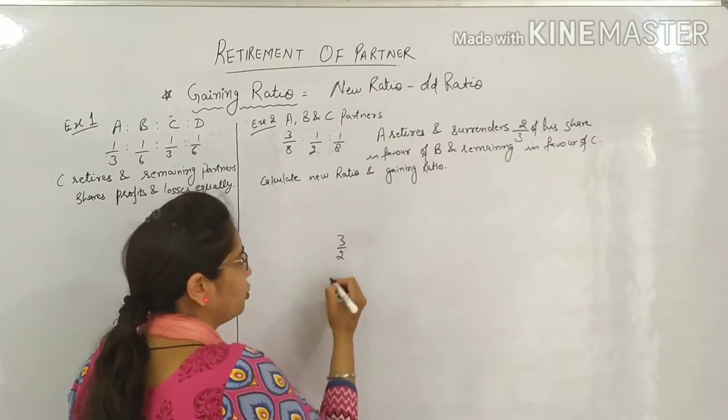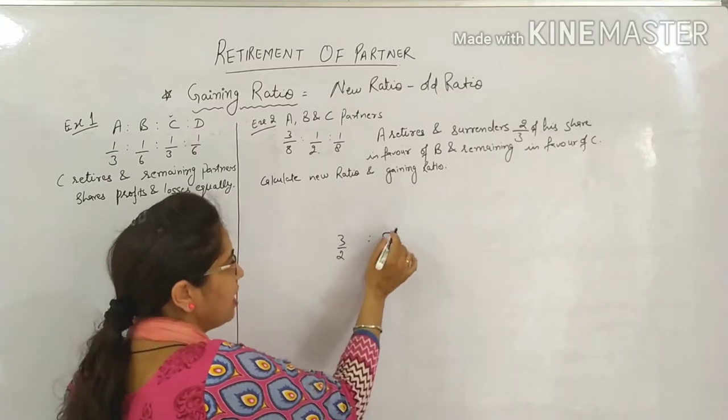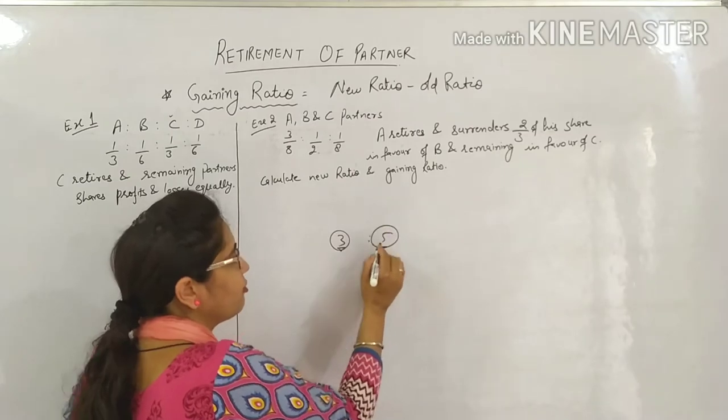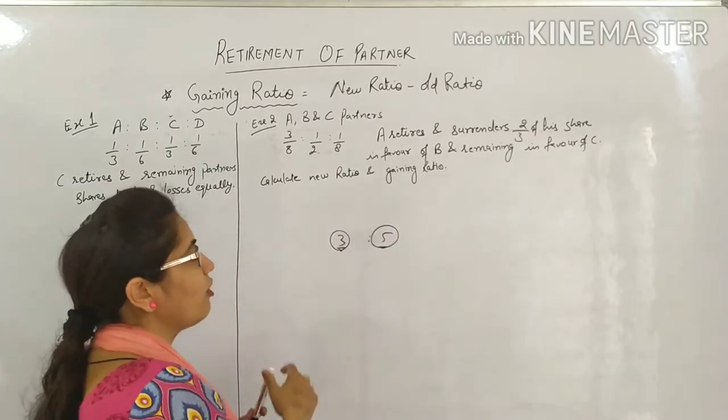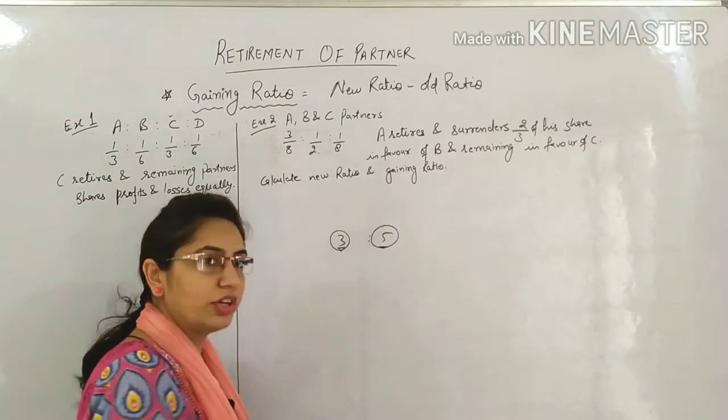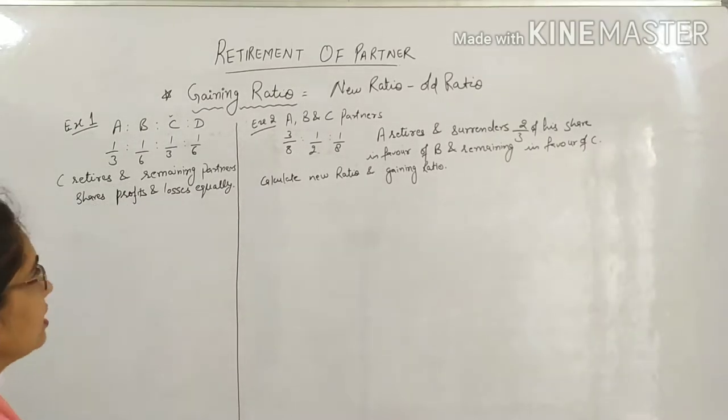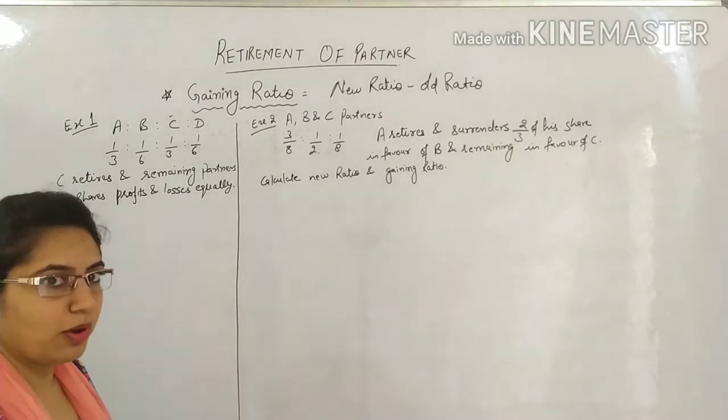Suppose you are getting 3 rupees now, and later you get 5 rupees, then you are gaining. That's why the gaining ratio formula is new ratio minus old ratio. So now let's do example one. For this you need to know how to calculate new ratio first, only then can you reach the gaining ratio question.